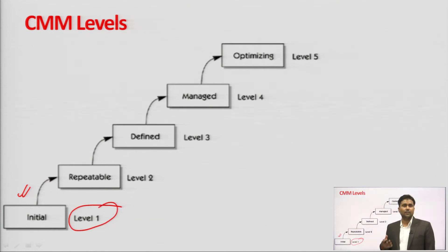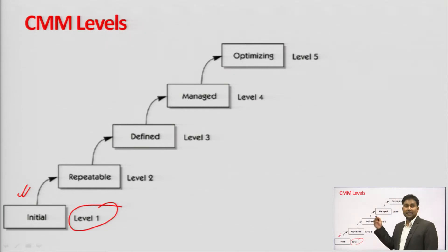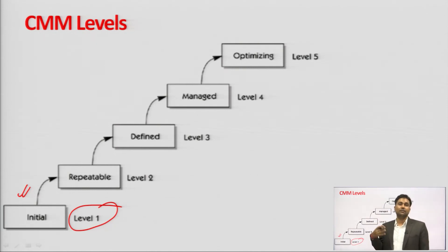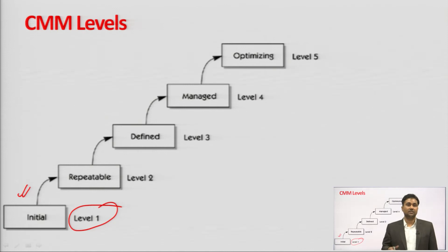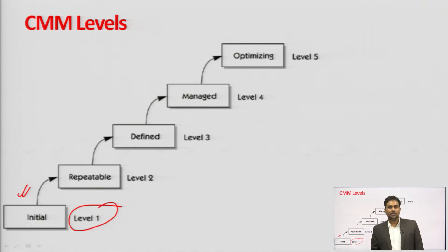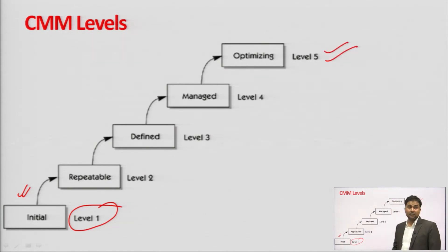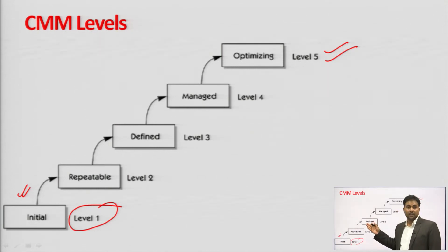At level 1, employee insurance may or may not exist, salaries and multiple parameters are not well managed. As your level increases, you get higher accreditation. Major companies like TCS, Wipro, Infosys, Cognizant, Google, and Cisco are CMM level 5 companies. Start-up companies begin at level 1 and gradually increase their level, improving each parameter step by step.